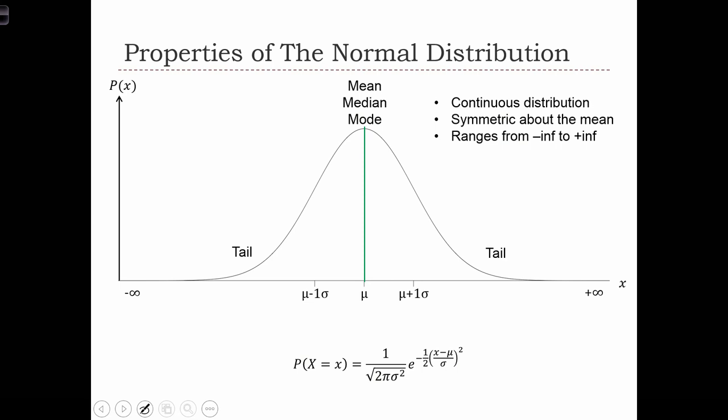There are certain properties that you need to know about the normal distribution. The first thing is that it's a continuous distribution. All of the distributions that we've seen so far have been discrete.